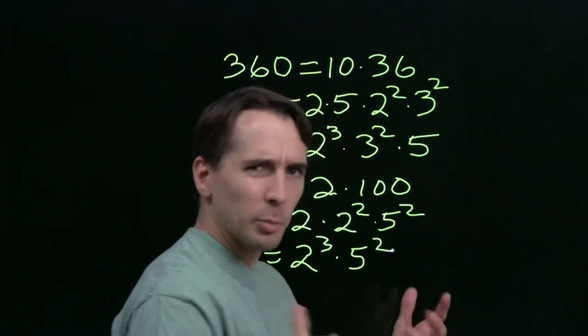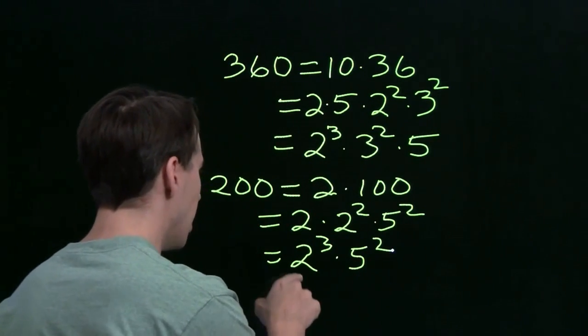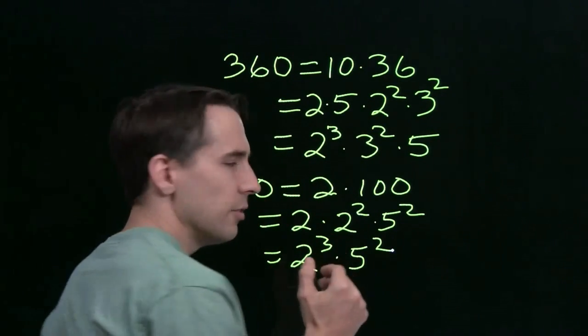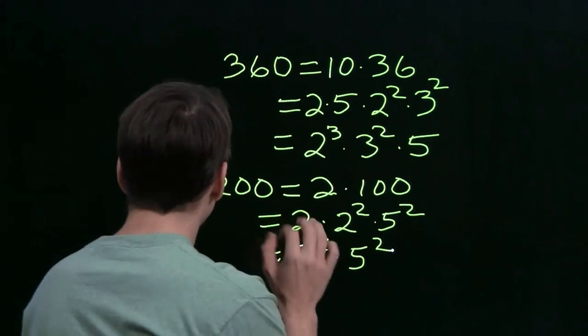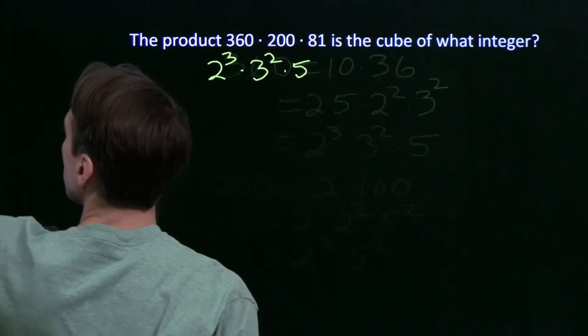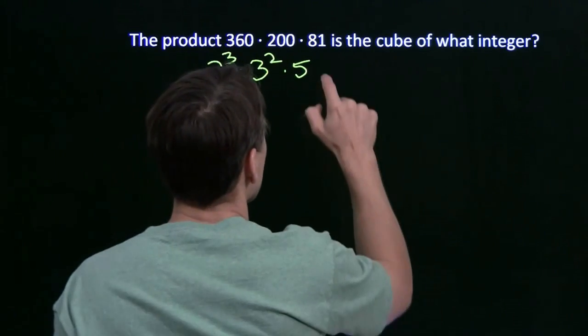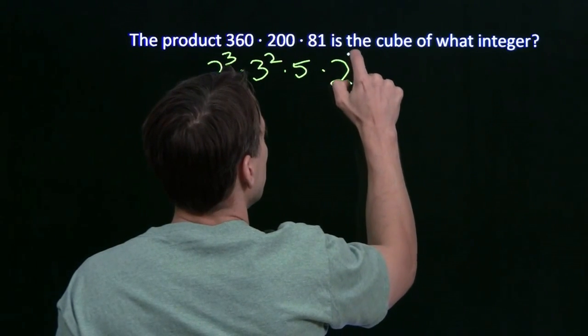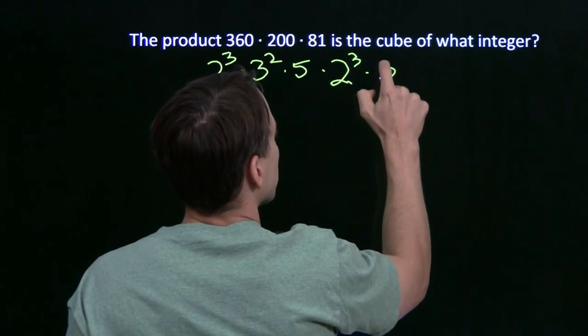And I'm going to check that real quick. I like to check my intermediate steps just to make sure I don't mess up. 2 cubed is 8, 5 squared is 25, 8 times 25, that's 200. We have the right prime factorization there, so this is just 2 cubed times 5 squared.